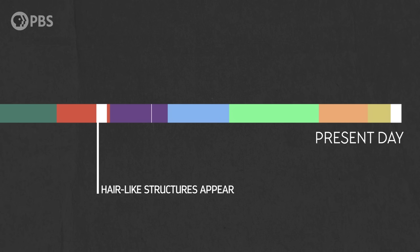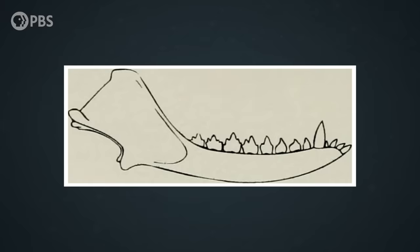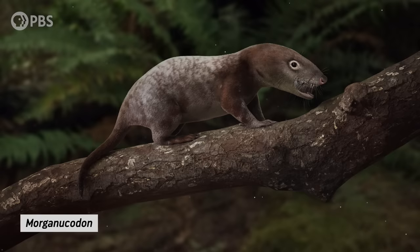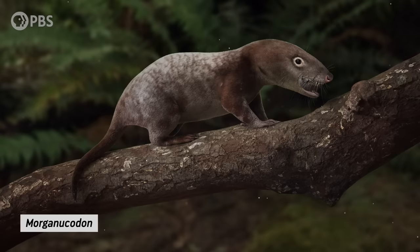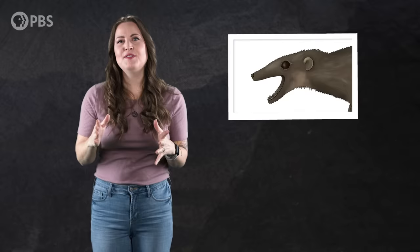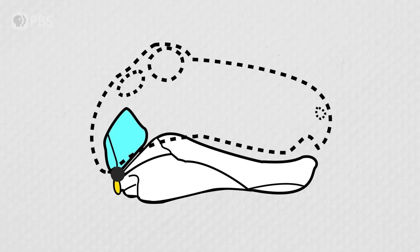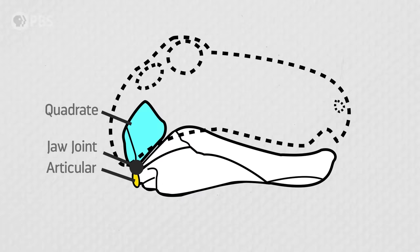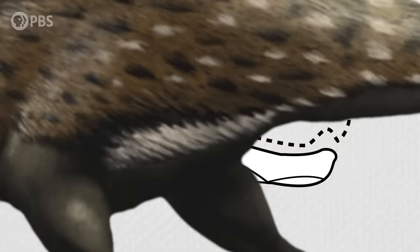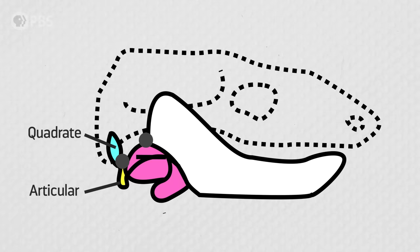After the evolution of fur, the first mammaliaforms appeared sometime between 215 and 205 million years ago, and their fossils show us that mammal-like jaws were the next features to arise. One of the first of these was a tiny shrew-like creature from the late Triassic called Morganucodon. Its fossils have been found mostly in Europe and China. Something really interesting was happening with its jaw joint. The earliest ancestors of mammaliaforms had four bones in their jaws, and the jaw joint was formed by two bones called the articular and the quadrate. Morganucodon still had this old-style jaw joint, but it also had a second jaw joint made up of the same two bones as the jaw joints of all living mammals — the dentary or mandible and the squamosal.